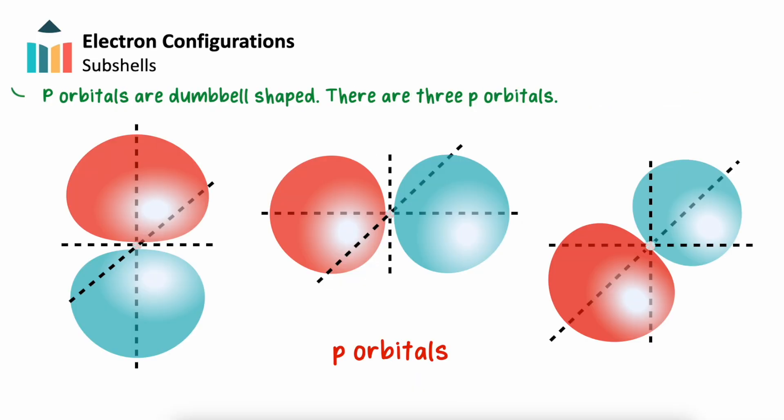P orbitals are dumbbell shaped. This allows us to have three P orbitals, which lie at 90 degree angles to each other. One on the x axis, one on the y axis, and one on the z axis.